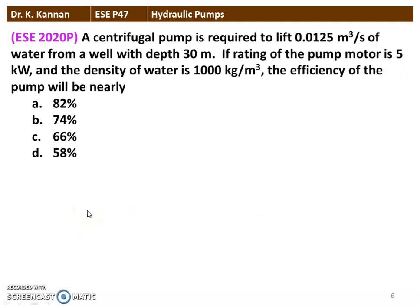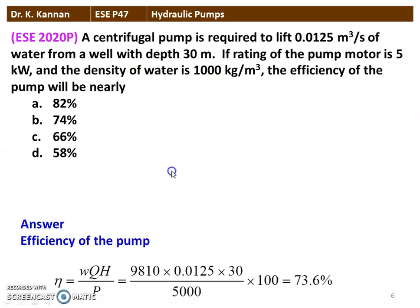The next question from the 2020 question paper: a centrifugal pump is required to lift 0.0125 m³/s of water from a well with a depth of 30 meters. The pump motor rating is 5 kilowatt and density of water is 1000 kg/m³. We calculate efficiency: η = W·Q·H / Power = 9810 × 0.0125 × 30 / 5000 × 100 = 73.6%. The answer is option B, approximately 74% efficiency.